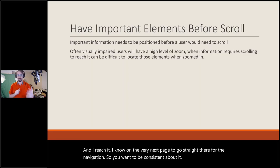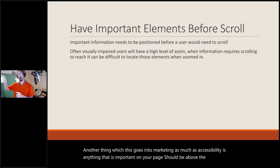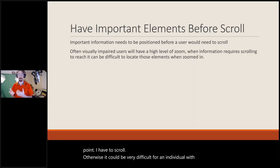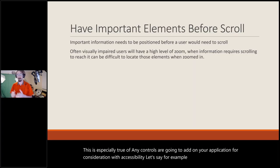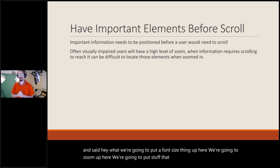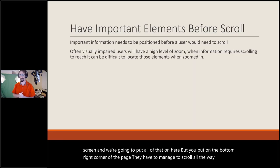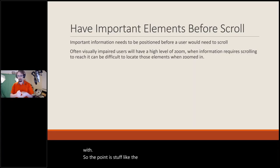Anything important on your page should be above the fold — above the point where you need to scroll. This can be very difficult for individuals with accessibility concerns to reach otherwise. This is especially true for accessibility controls you add to your application. For example, if you add font size controls, zoom settings, or screen rotation toggles but put them in the bottom-right corner, they may be unreachable for the person who needs them most. Title, navigation, and any important details should be right near the top.